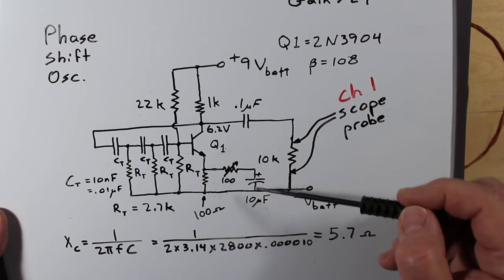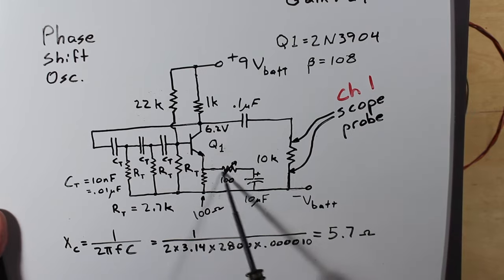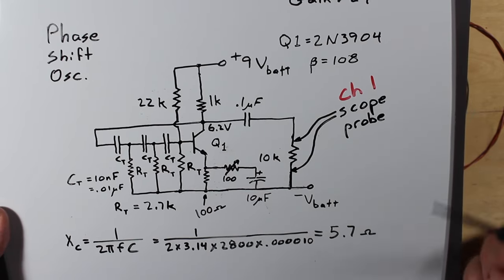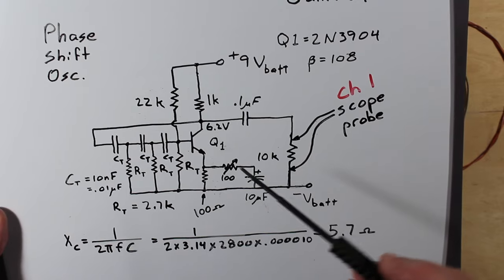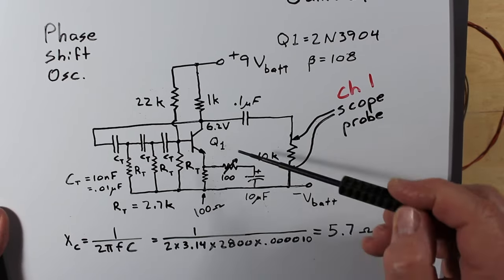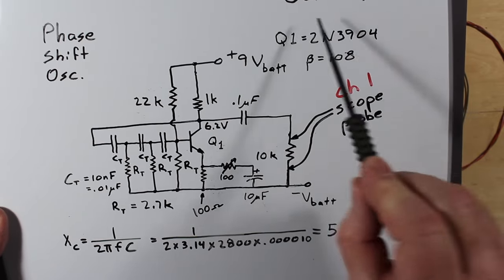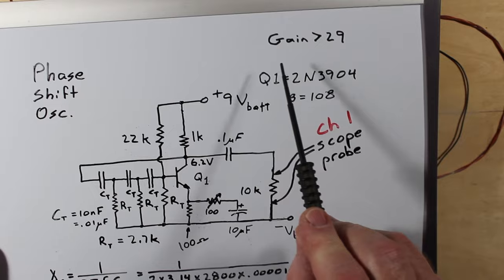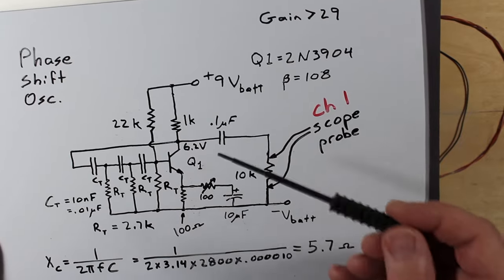So the 1k divided by the six ohm load, if this was shorted straight across, would give us about 160 ish. Probably wouldn't go quite that because the beta is not that high for this guy, but it would give us more than enough to give us that 29 gain up here at that frequency.